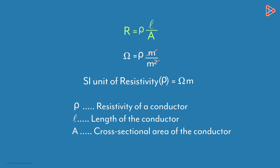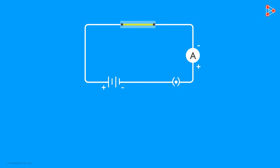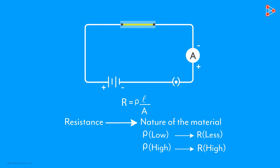We will understand resistivity in detail in the next video. But before we end this video, let's quickly review what we learnt. The resistance of a conductor is directly proportional to its length and inversely proportional to its cross-sectional area. It also depends on the nature of the material — if the material has low resistivity, its resistance will be lower, and if it has more resistivity, its resistance will be higher.